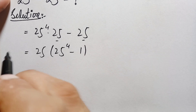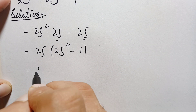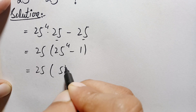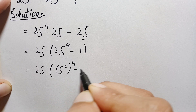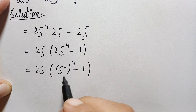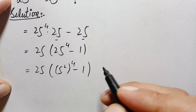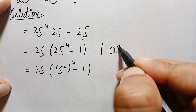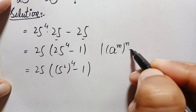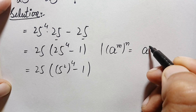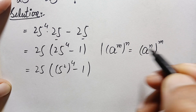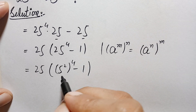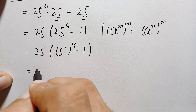Next, we can write 25 in exponential form as 5 squared, raised to power 4, minus 1. We will use the exponential identity: a raised to power m, raised to power n, can also be written as a raised to power (m times n). Interchanging the position of powers, this number becomes 25 times (5 raised to power 8 minus 1).